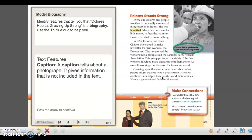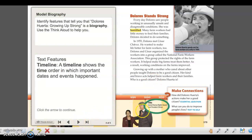There is another feature besides the caption I told you we were going to focus on today. That's a timeline. A timeline shows the time order in which important dates and events happened. Looking at the timeline that you see on your screen, in 1998 Dolores earned a Human Rights Award from President Clinton.